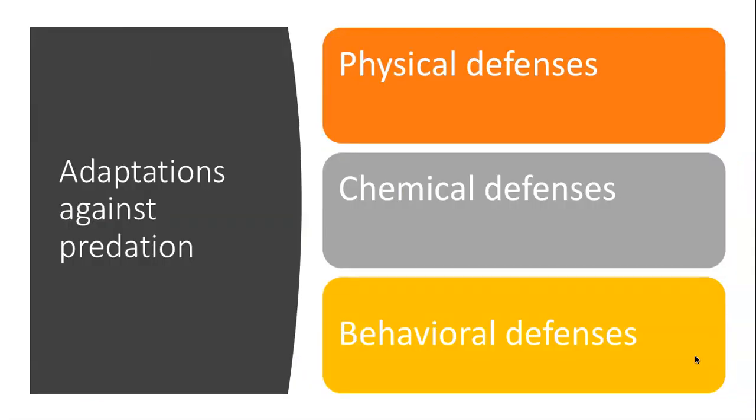Adaptations against predation include three different types: organisms can adapt physically, chemically, or behaviorally. They can do all three, pick two, or only do one. So let's talk about some really interesting examples of each.